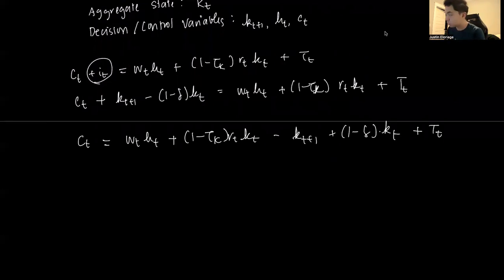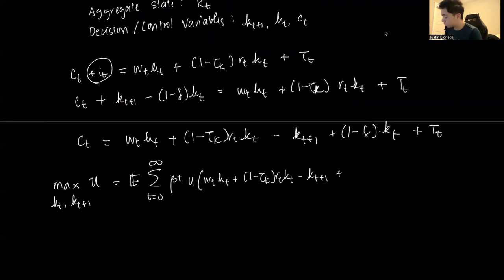So for the consumer, the goal is to maximize U, which is you're deciding to maximize with respect to Ht and Kt plus 1, equal to expected value summation T is equal to 0 to infinity beta T, U, then plug it all in Wt Ht plus 1 minus tau K, Rt Kt minus Kt plus 1 plus 1 minus delta Kt plus Tt, 1 minus Ht.